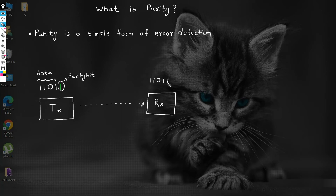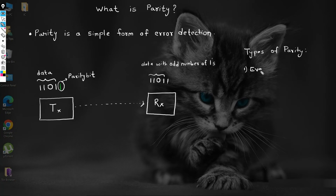Here, we have an odd number of ones in the data. As mentioned before, there are two types of parity: even parity and odd parity.